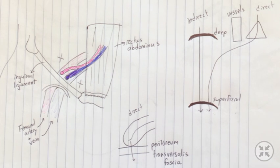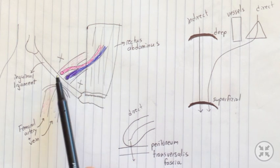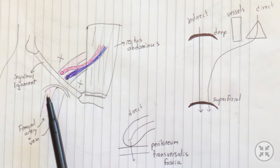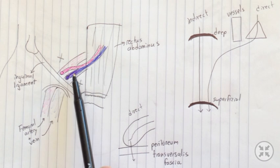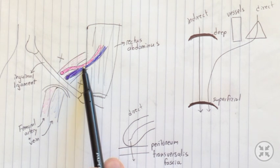Starting off with the different anatomical landmarks in the region. You have your rectus abdominis here, your inguinal ligament here, your femoral artery and vein here, and two branches of the femoral artery and vein, the inferior epigastric artery and vein here.